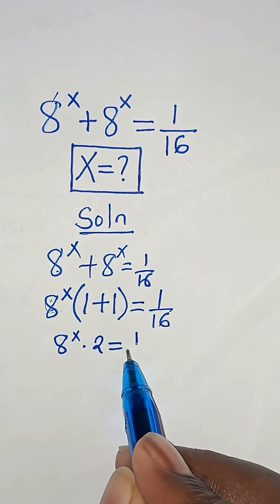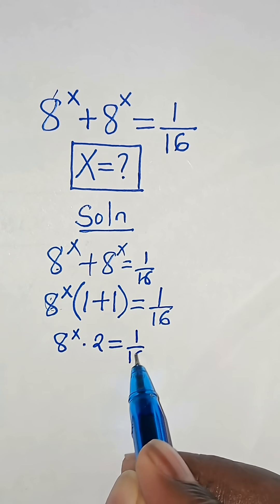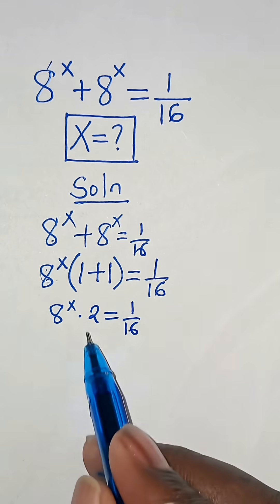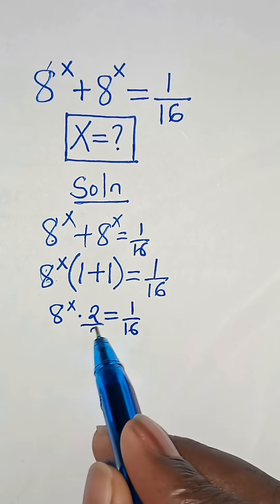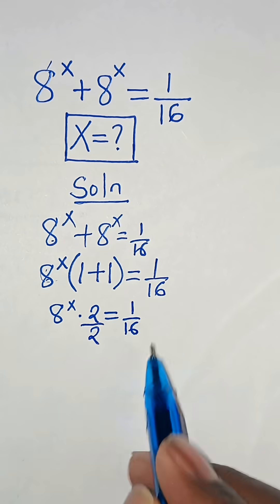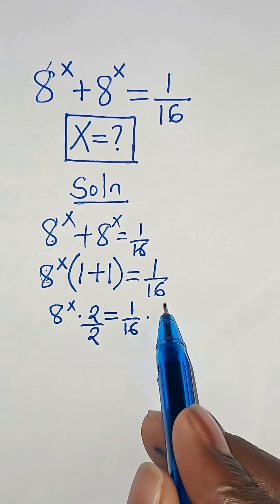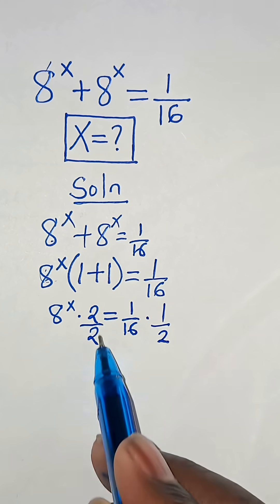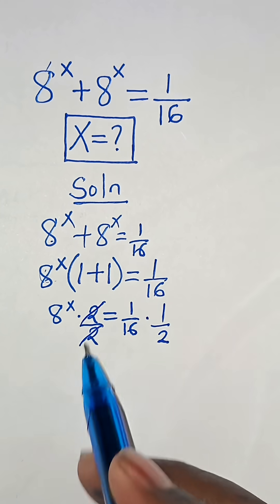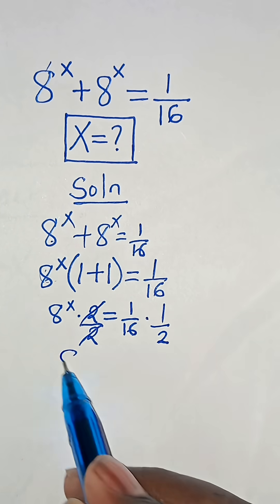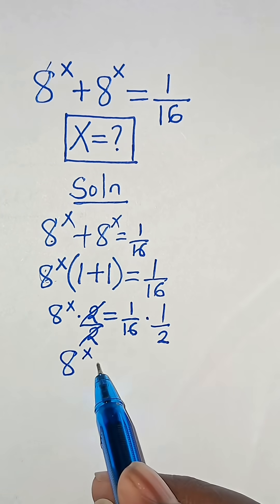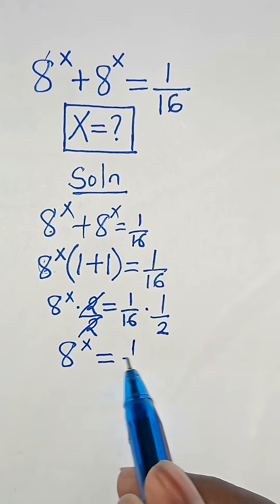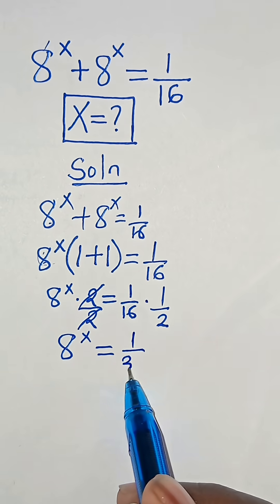Now let's divide by 2 on both sides, which is the same as multiplying by 1 over 2. So now we have 8 to the power of x equals 1 over 32.